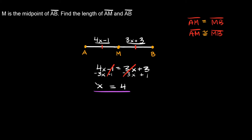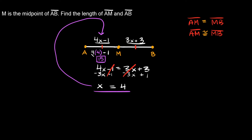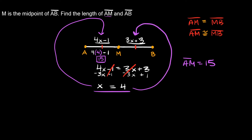Now plug X equals 4 into the expression for AM: 4 times 4 minus 1 equals 16 minus 1, which equals 15. Let's verify with MB: 3 times 4 plus 3 equals 12 plus 3, which also equals 15. Since both sides are equal, we did it right. The length of segment AM is 15, and the length of the whole segment AB is 30.